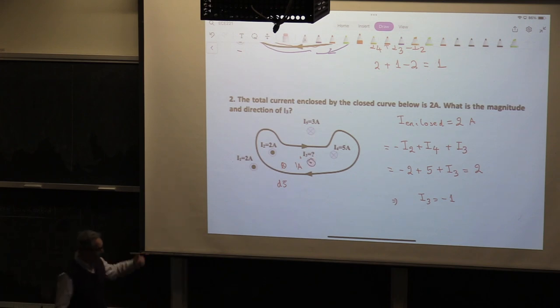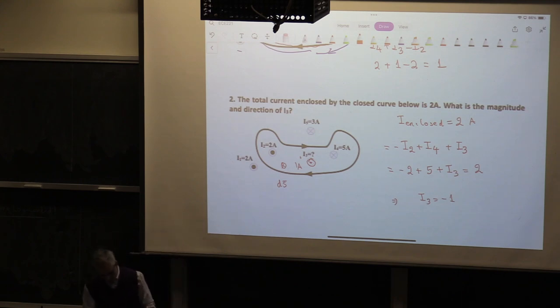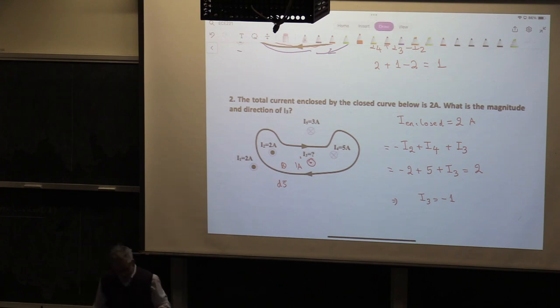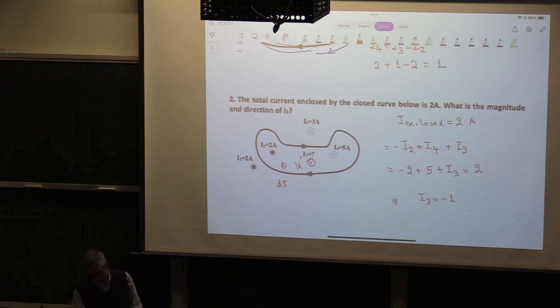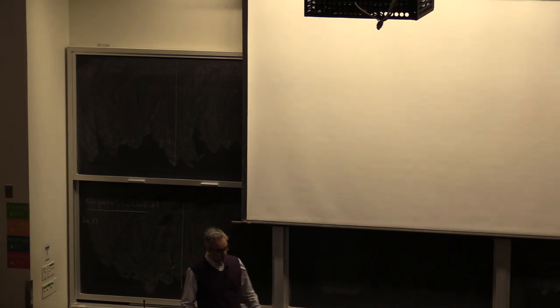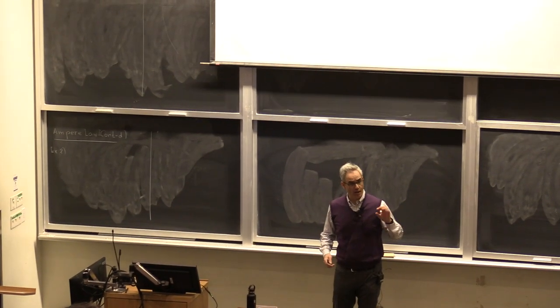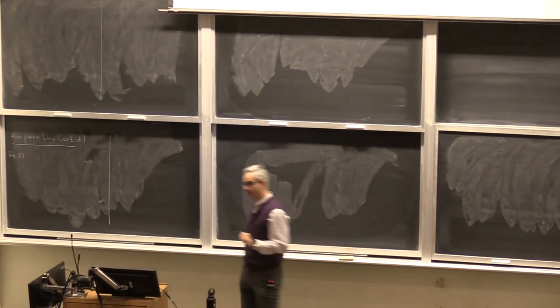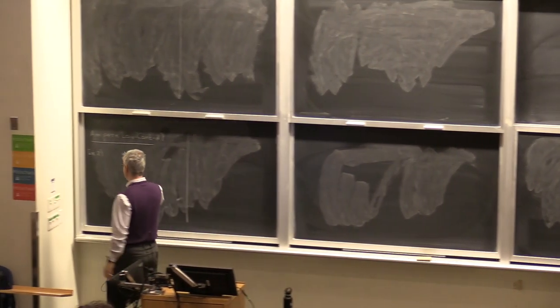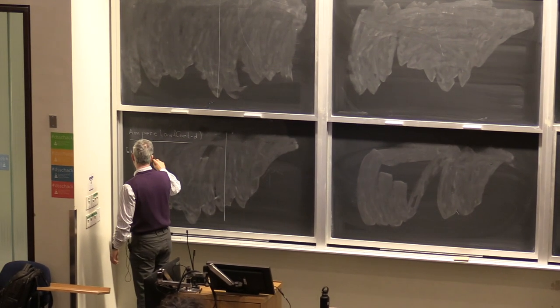Since I3 came out negative from the equation, the direction is out of the board. So these are the basics of Ampere's Law. Ampere's Law holds not just for wire distributions but also for volume or surface current densities. We saw one example yesterday with a solid conductor, and now I will do a very similar one with a cylindrical shell.